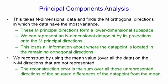And then the error in our reconstruction would be the sum over all these unrepresented directions of the squared difference between the value the data point had on that direction and the mean value on that direction. This is most easily seen in a picture.